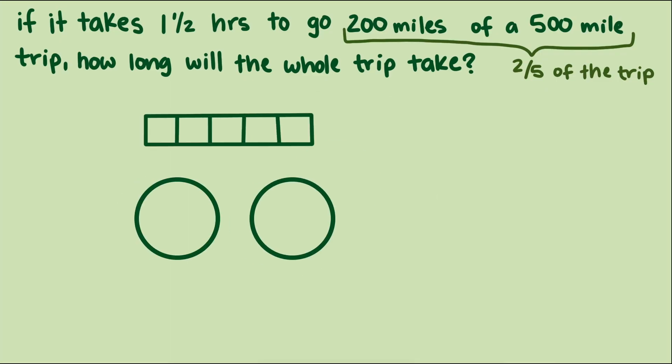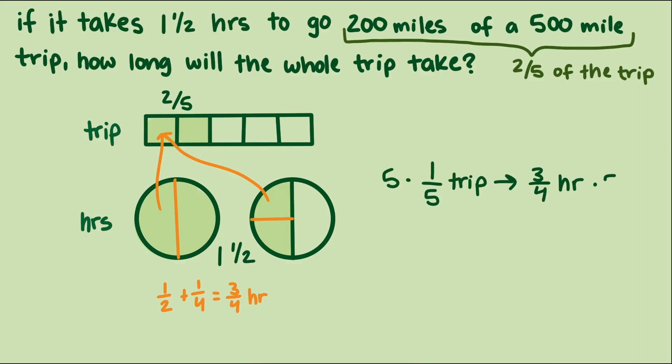We'll share two ways to reason through this. First we could think about finding how long it takes to go one-fifth of the way, by taking one and a half and dividing by two. Now that we have our rate for one-fifth of a trip, we can multiply by five to find our rate for the whole. Three and three-fourths.